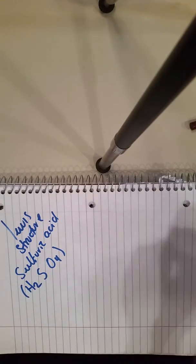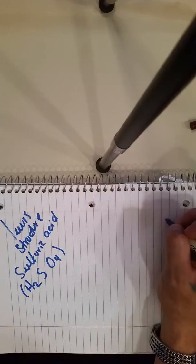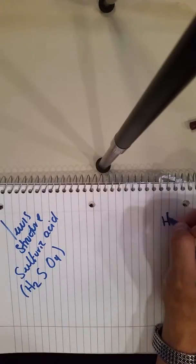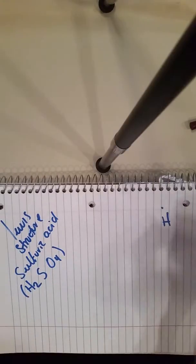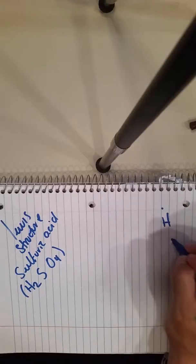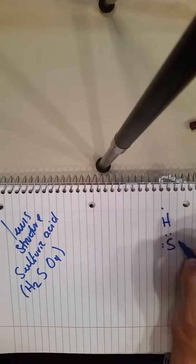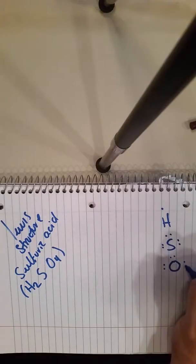So now we're going to draw it. Let's remember that hydrogen has one electron, sulfur has six, and oxygen has six as well.